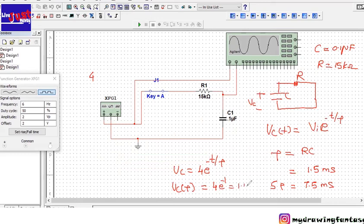1, is equal to 1.47, almost 1.48. So we say at tau, or at time constant, the capacitor will reach 38 percent of its voltage.